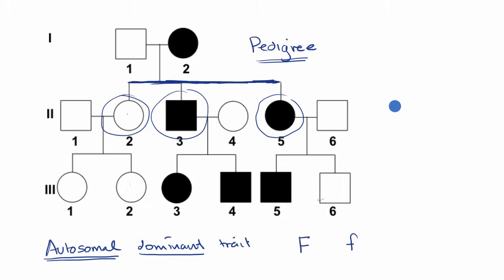If someone has a genotype of capital F, capital F, or capital F, lowercase f, or lowercase f, capital F, if we wanted to think about order, which one you're getting from which parent. Well then in all of these situations, they would exhibit the phenotype of freckles.